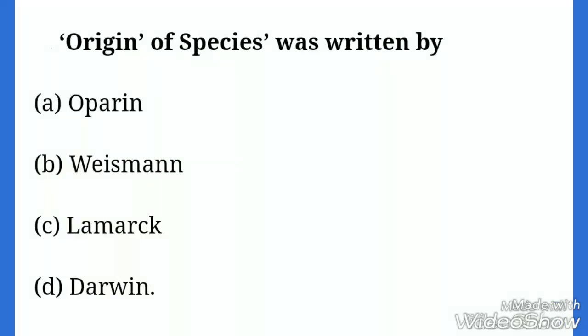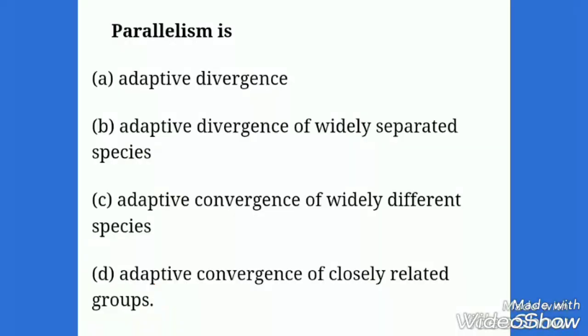Now next question: The Origin of Species was written by? First option is Oparin. Oparin has written the book The Origin of Life. Weismann has given the theory of continuity of germplasm. Lamarck has written the book Philosophic Zoologic. So here the correct option is Darwin. Darwin has written the book Origin of Species.